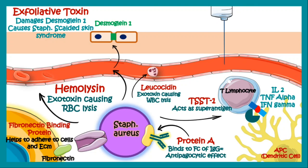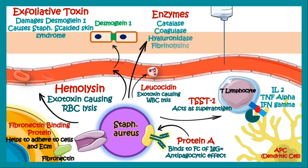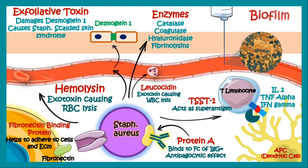This leads to Toxic Shock Syndrome. Apart from that, Staphylococcus also produces a lot of enzymes like catalase, coagulase, hyaluronidase, and fibrinolysin, which also help in the pathogenicity of Staphylococcus aureus. Additionally, in inserted devices like a needle, IV cannula, or catheter, Staphylococcus can produce biofilms and can cause catheter-associated bacterial infections. So this is, in brief, the intoxication of Staphylococcus aureus.